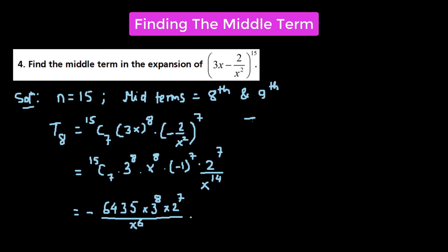Now we find out the 9th term. T9 equals 15C8 times (3x)^(15−8) = (3x)⁷, times (−2/x²)⁸. I made a mistake earlier — it should be 15C8, and 15 − 8 = 7, times (−2/x²) raised to the power of 8.